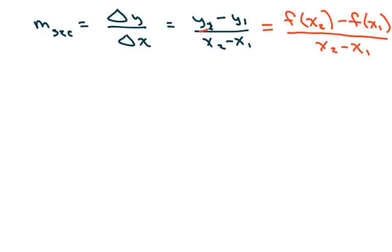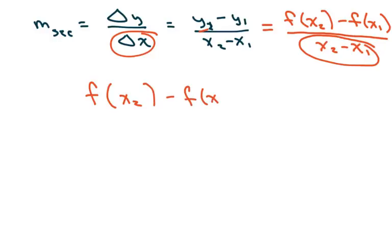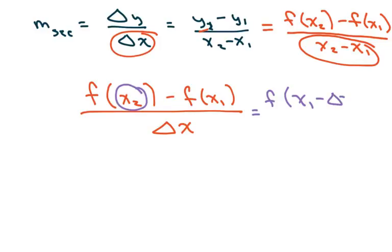Now we know that X sub 2 minus X sub 1 equals this. So I'm going to write it again, F of X sub 2 minus F of X sub 1 over change in X. And I also know from the previous slide that F of X sub 2 equals, or X sub 2 equals, actually, X sub 1 minus, change in X or delta X. And then so we have minus F of X sub 1 over change in X.